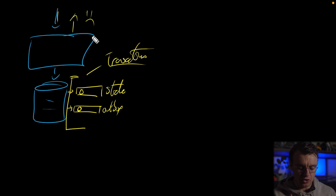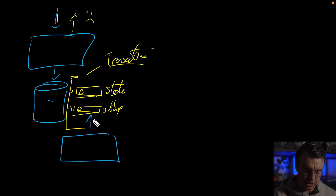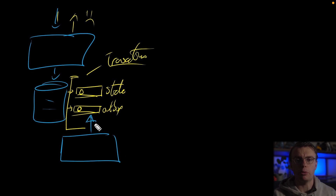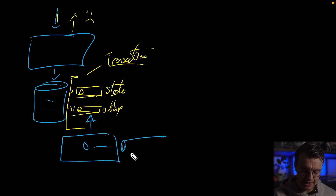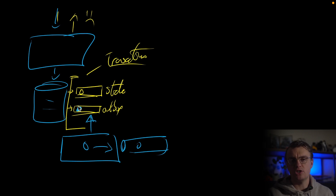Now you're in a situation where you can guarantee the state has been written and you've got an event in your outbox table waiting to be published. You then have a separate running application monitoring that outbox table, looking for events that haven't yet been published. It picks up those events and sends them to your message bus, then marks that record as sent so it isn't processed multiple times.